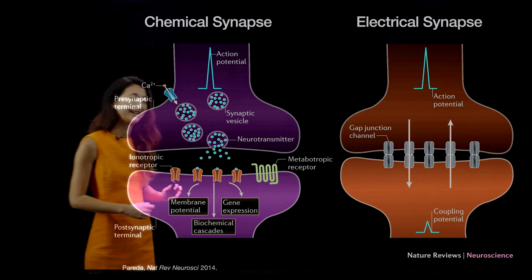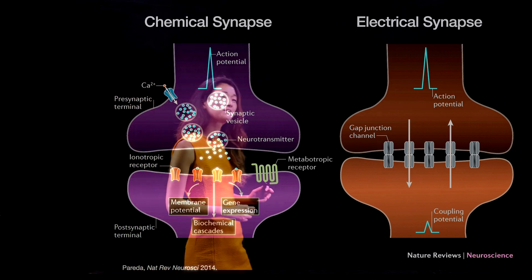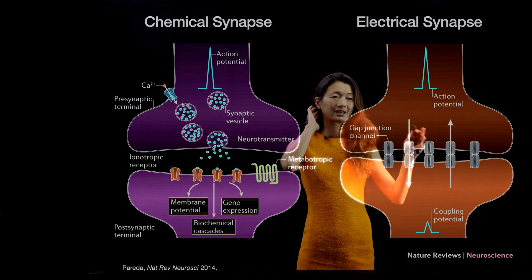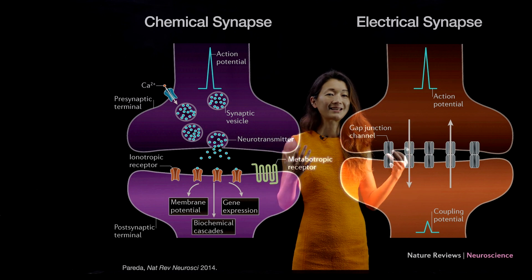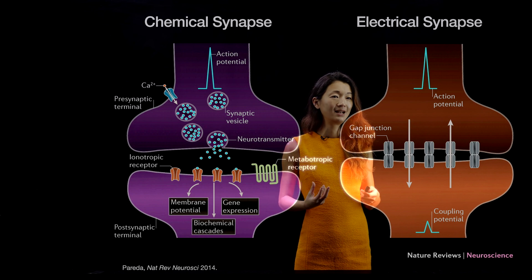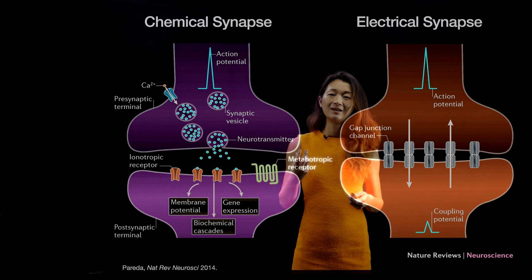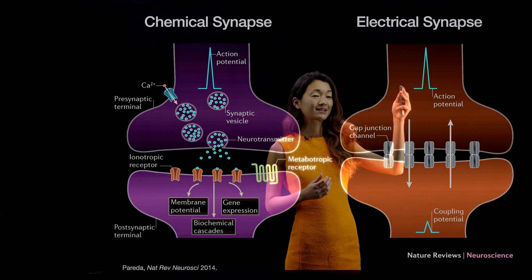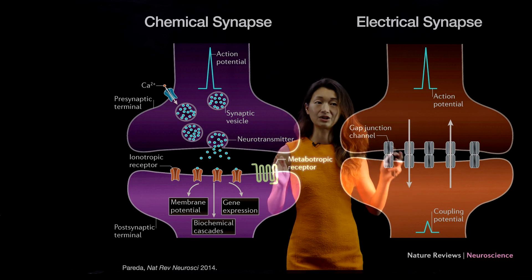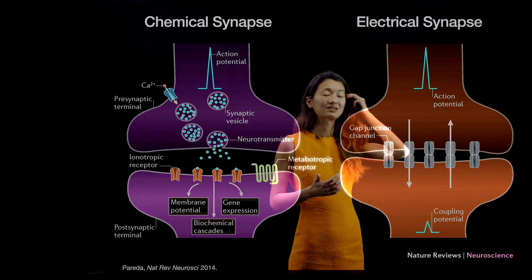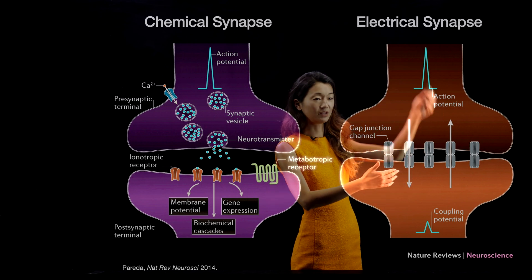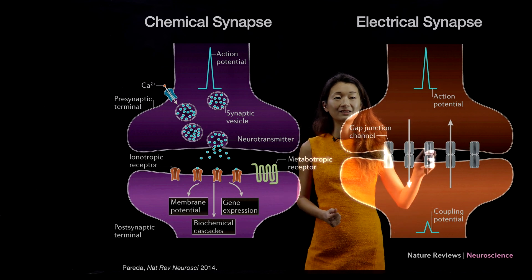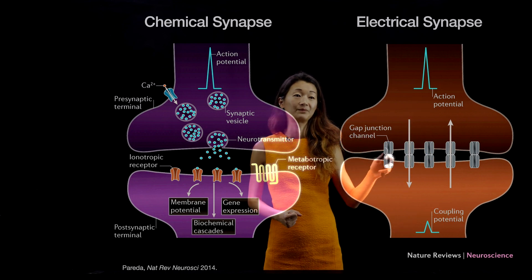None of those things are true in the electrical synapse. In electrical synapses, the pre-synaptic and post-synaptic cells are held together by what are called gap junctions. These gap junction channels are semi-permanent protein channels through which ions can flow. They are not regular ion channels that are either open or closed — there is basically a continuous connection between the intracellular spaces of the two cells through these gap junction channels.